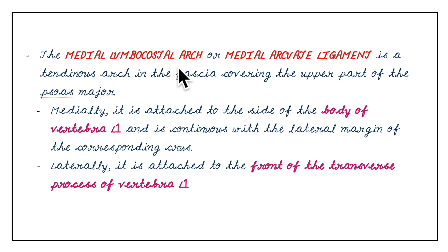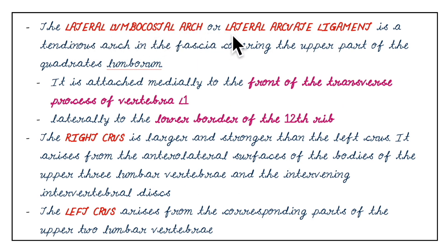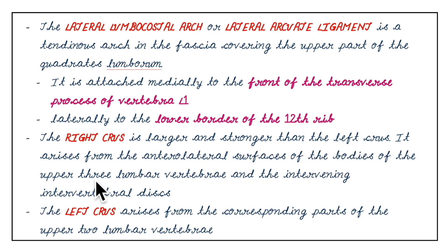In summary: the medial arcuate ligament is a tendinous arch in the fascia covering the upper part of the psoas major, attached medially to the side of the L1 body and laterally to the front of its transverse process. The lateral arcuate ligament covers the quadratus lumborum, attached medially to the transverse process of L1 and laterally to the lower border of the 12th rib. The right crus is larger and stronger, arising from the anterolateral surfaces of the upper three lumbar vertebrae and the intervening intervertebral discs. The left crus arises from the upper two lumbar vertebrae.